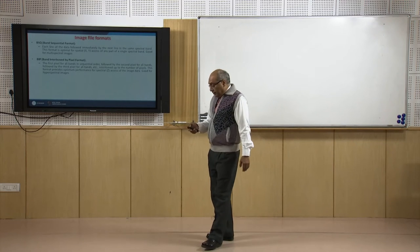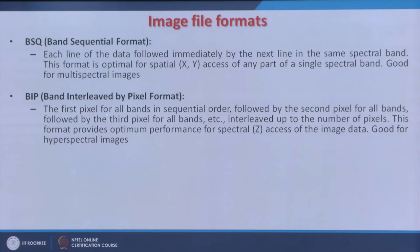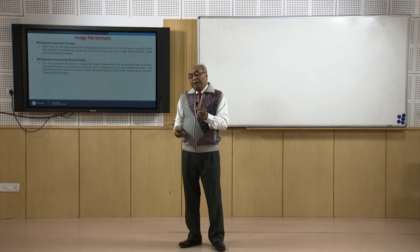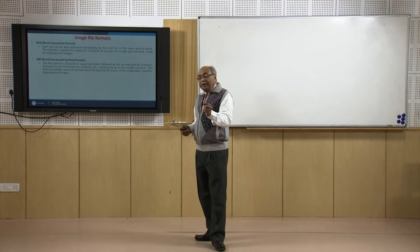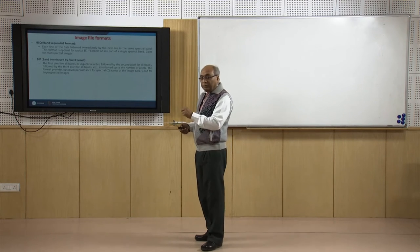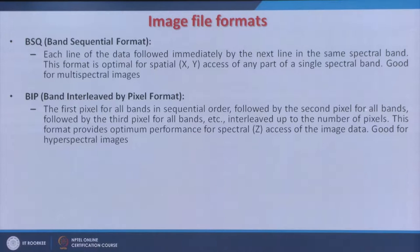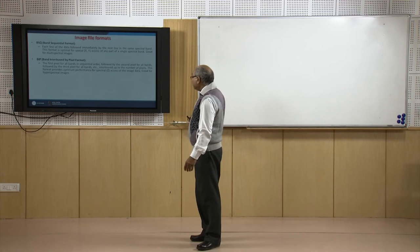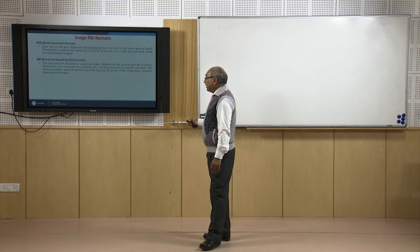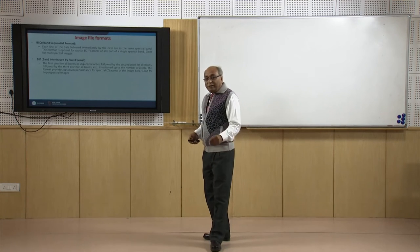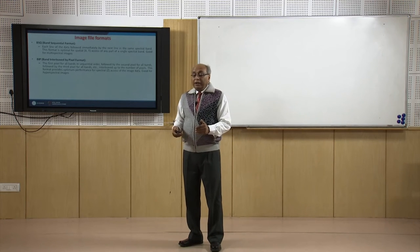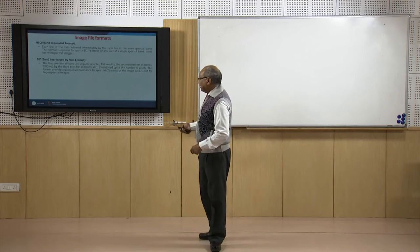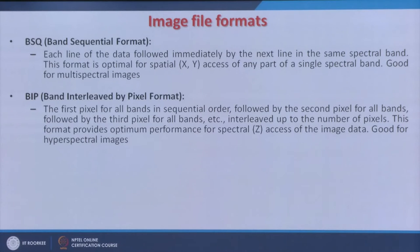So people designed another format called Band Interleaved by Pixel (BIP), where the first pixel of all bands is written in sequential order — first pixel of band 1, first pixel of band 2, first pixel of band 3, first pixel of band 4 — and likewise for subsequent pixels up to the number of columns, say 512. This format provides optimal performance for spectral access and is good for hyperspectral images.